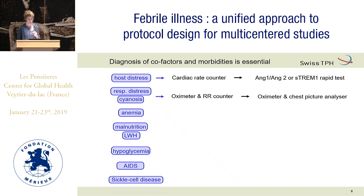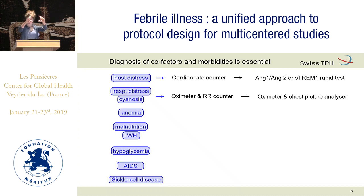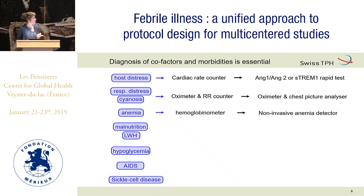For respiratory distress, what we use presently is an oximeter and a respiratory counter, mostly manually counted. But could we imagine in the future having a chest picture analysis? You take a picture or small video of the chest of the child, and this helps health workers detect chest indrawing. For anemia, we have included the hemoglobinometer, but we would really like to have a non-invasive test.